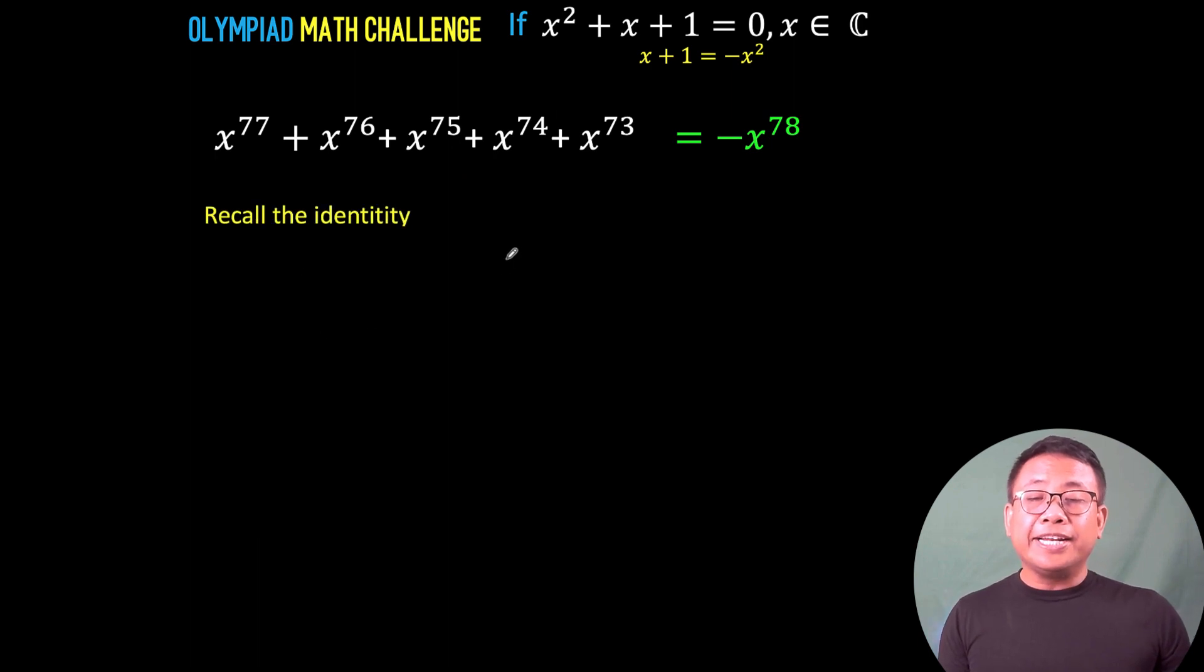Now, let's recall the identity for the difference of two cubes. Here, if we let a = x and b = 1, then if we take the difference of these two cubes, that would be equal to (x - 1) times (x² + x + 1). And notice that this x² + x + 1 is, again, this given expression.